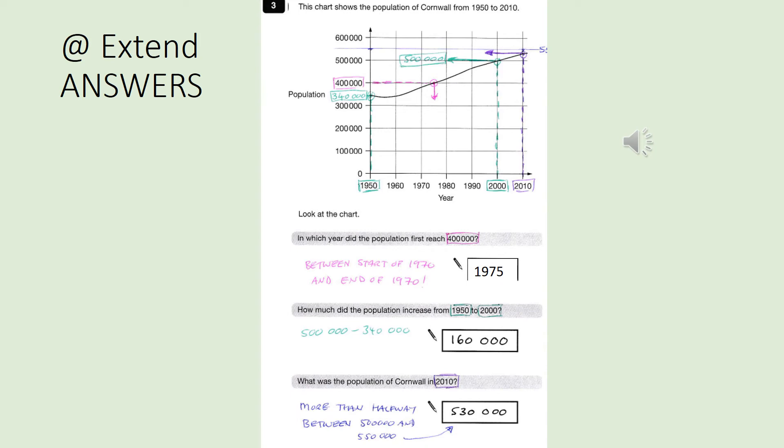Here are the Extend answers. Now I will give you a little bit of leeway. If you're not absolutely accurate on these but you're thereabouts, then that's fine because I understand that it is difficult to see it on the screen. Now I disagreed slightly with the person's answer here for the first question, in which year did the population first reach 400,000? Now they've circled in pink where the line first meets 400,000, where there was a data point that met 400,000.